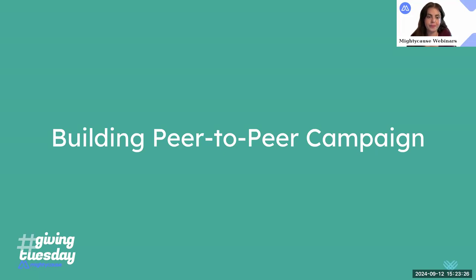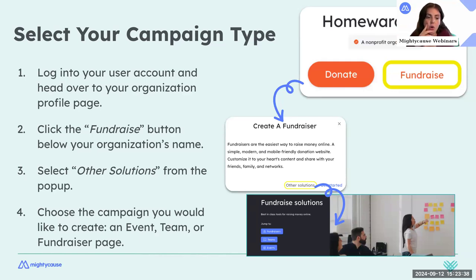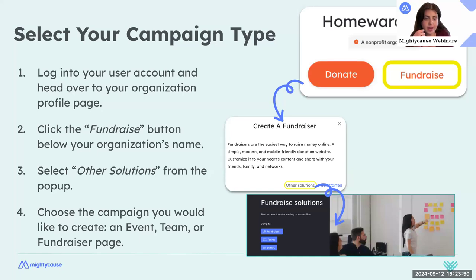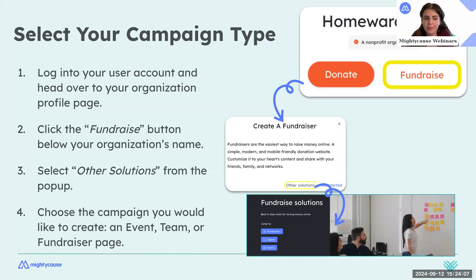Now let's talk about building your peer-to-peer fundraising campaign. There are a couple of different ways, but here's a simple way to get started. If you're on Mighty Cause, go to your organization page and click Fundraise. You'll be prompted to log in or sign up for an account and can start fundraising. If you want to create a team or event, click the Fundraise button, then click Other Solutions, and you'll see all the options available for the type of pages you want to create.